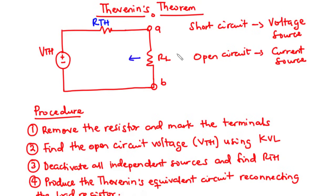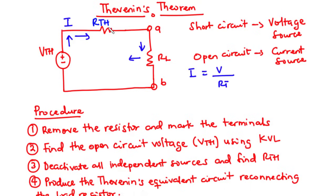We also have RL, which is called the load resistance. This load resistance is in series with RTH, so that the current produced by VTH will be the same current flowing through RTH and then RL. RL is also the resistance you want to find the current flowing through. The current flowing through the load resistor is given by I equals the voltage divided by the total resistance of the circuit. Since these two resistors are connected in series, I is equal to VTH divided by RTH plus RL.